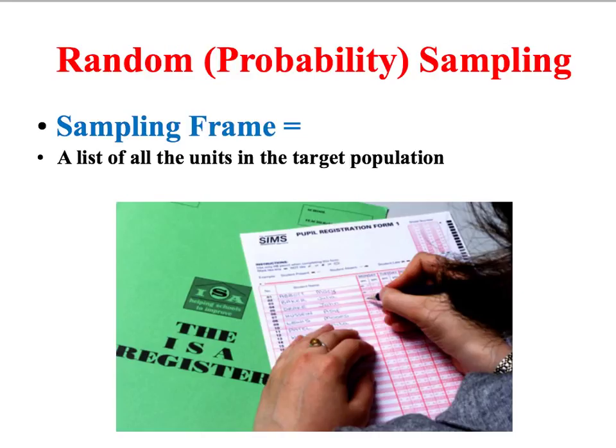Now for random sampling, the researcher initially needs a list of everybody in the target population. The technical term for this list is a sampling frame. So for example, if we were doing research on schools and looking to get a random sample of students, we could use registers as our sampling frame. The technical term for every name that appears on your sampling frame is a sampling unit.